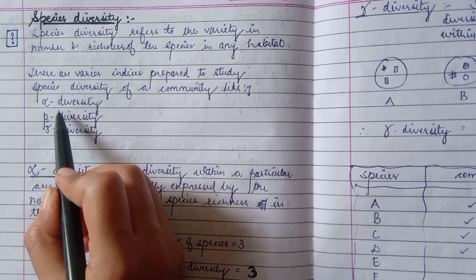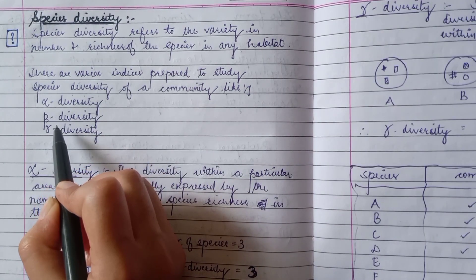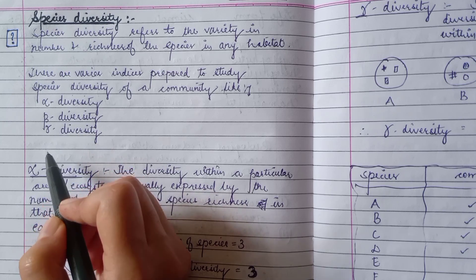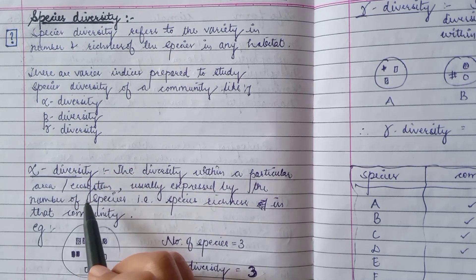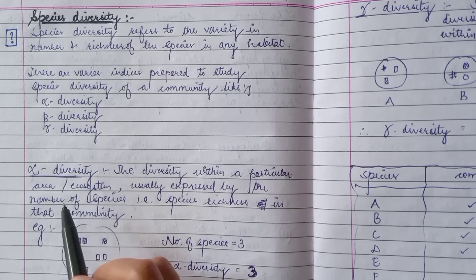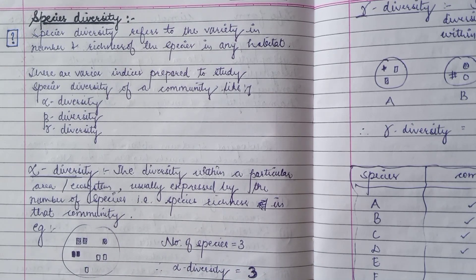We are going to discuss three indices: number one is alpha diversity, number two is beta diversity, and number three is gamma diversity. Firstly, we are going to talk about alpha diversity. Alpha diversity very simply tells us that if we have a particular area, ecosystem, or community, we ask how many species are present in it.